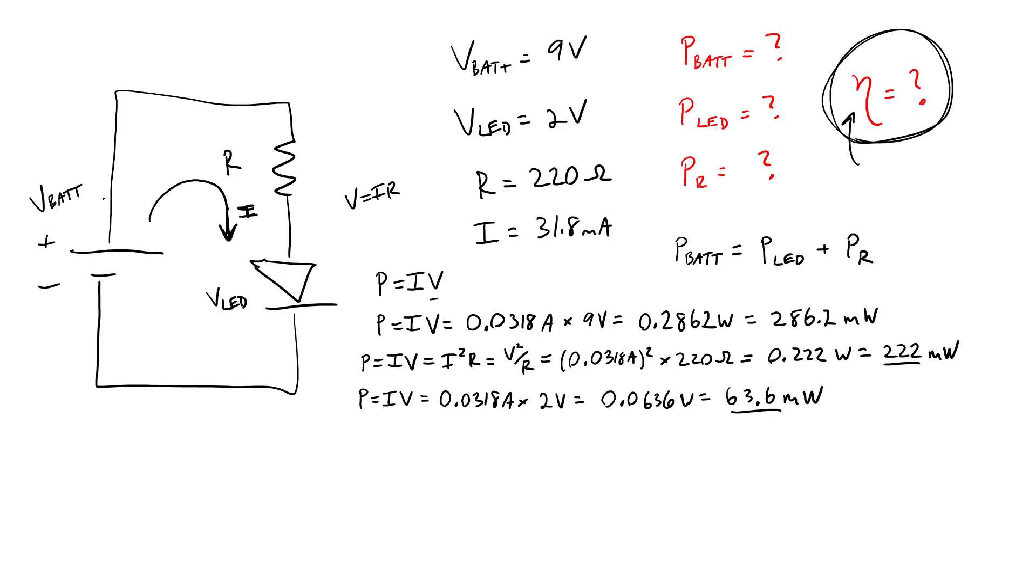And we are modeling an ideal circuit here. So we're ignoring, for example, resistance in the wires or internal resistance in the battery. Whereas in the real world, you would have additional power dissipated other places in the circuit. But for here, we're considering an ideal circuit where we just have the battery, the resistor, and the LED.